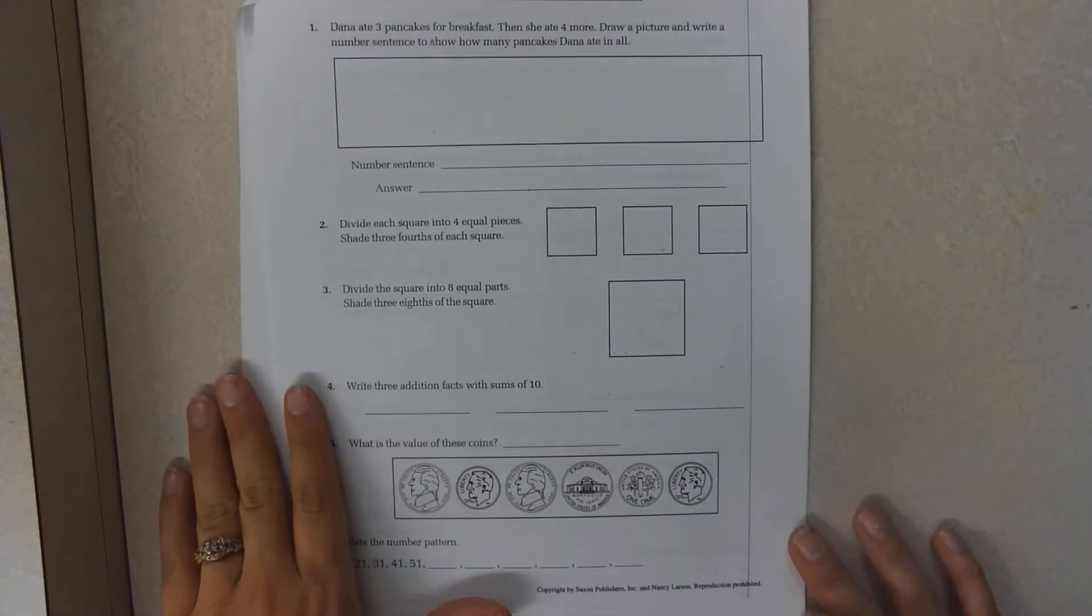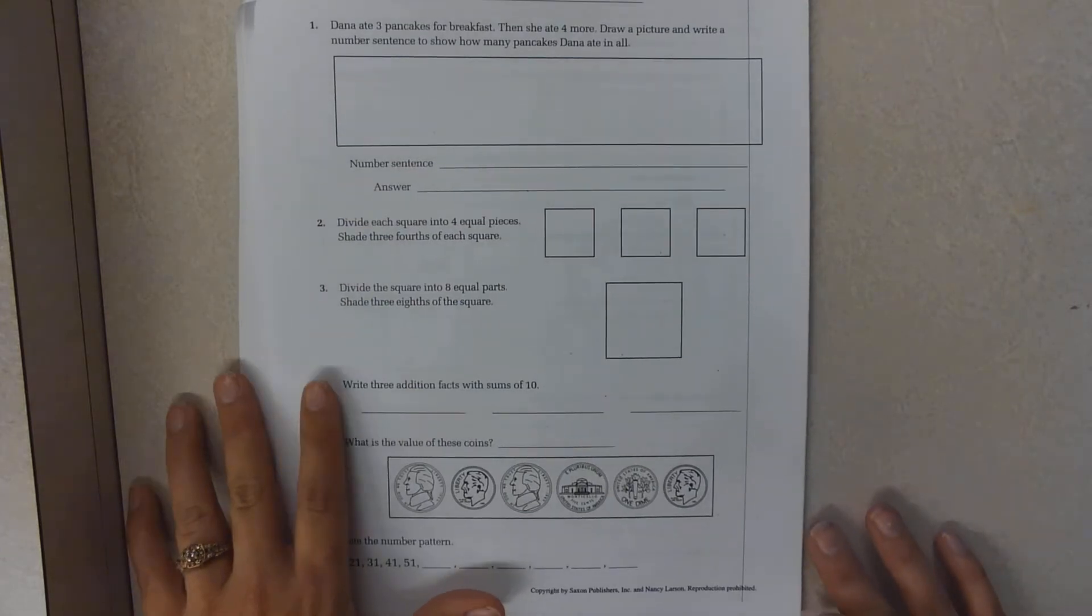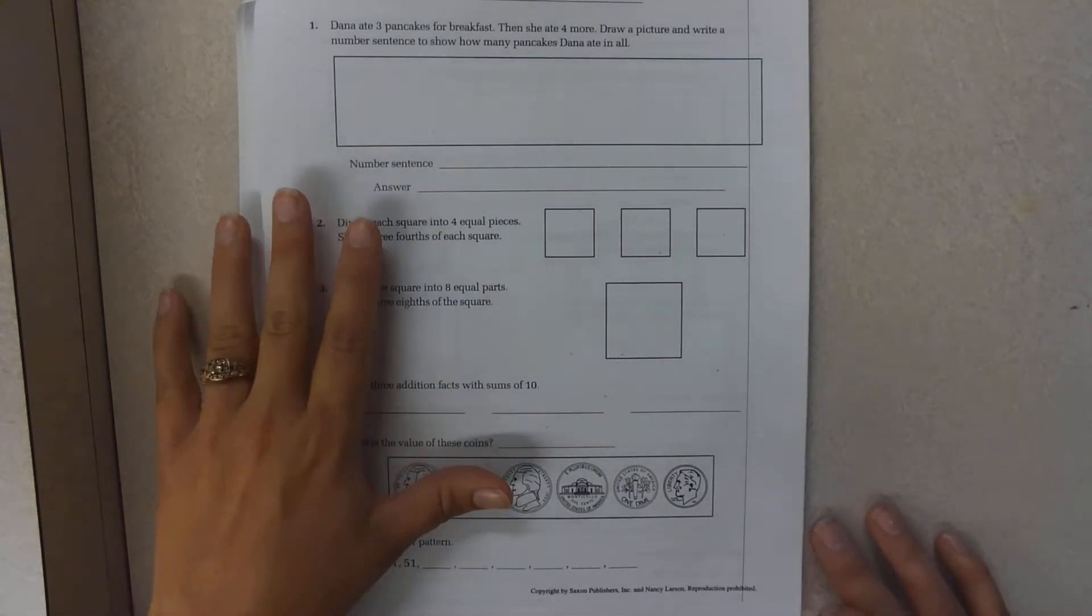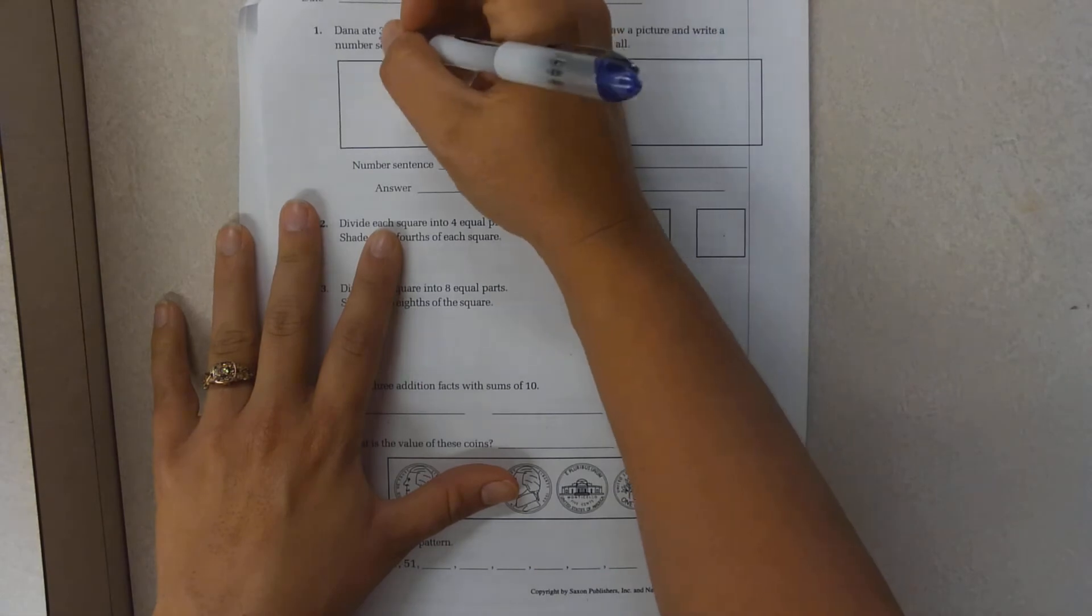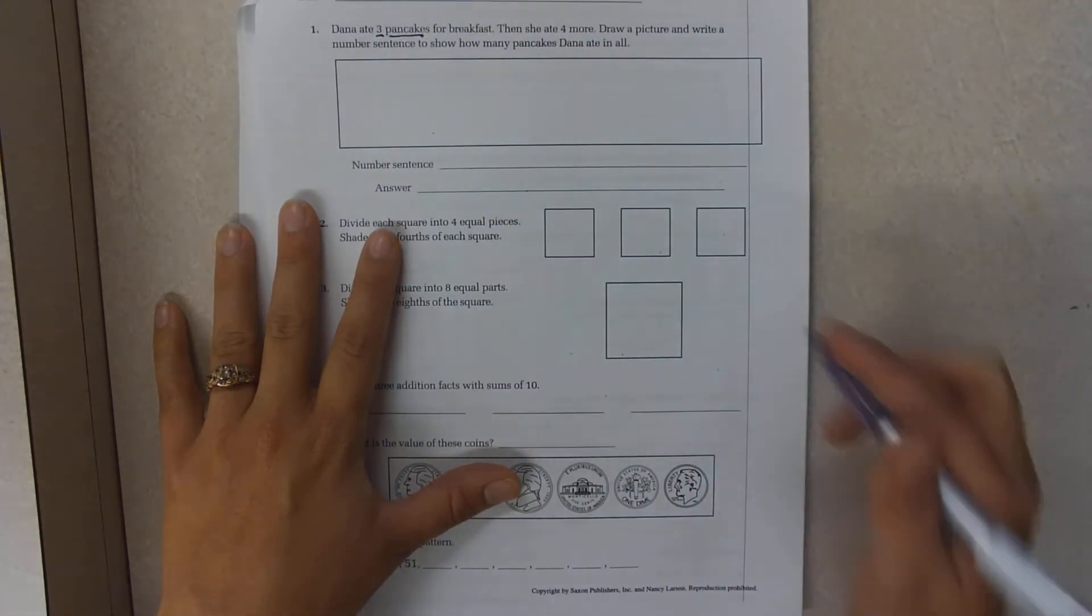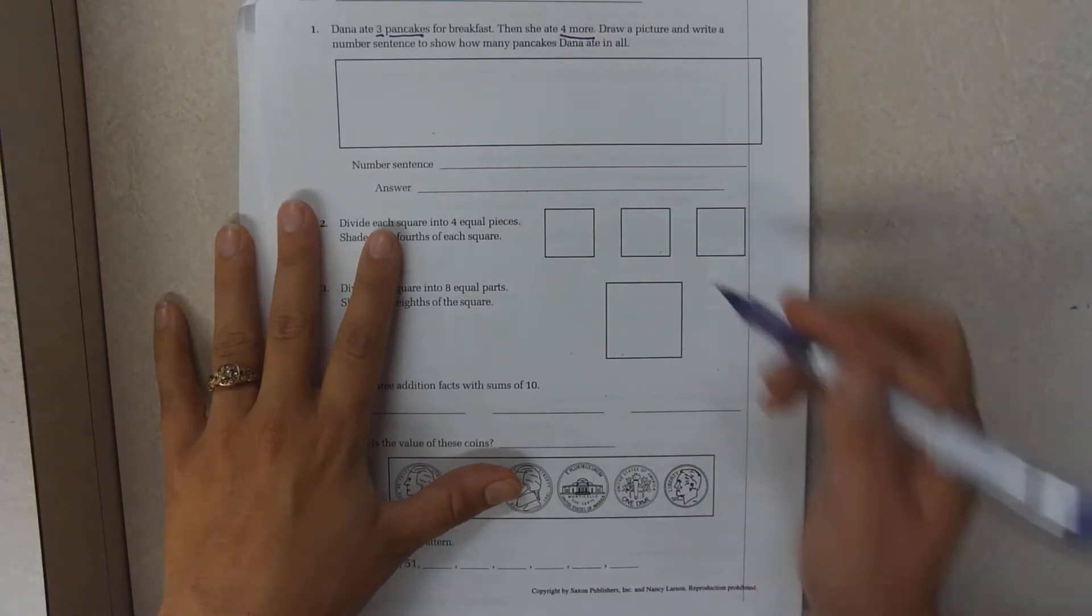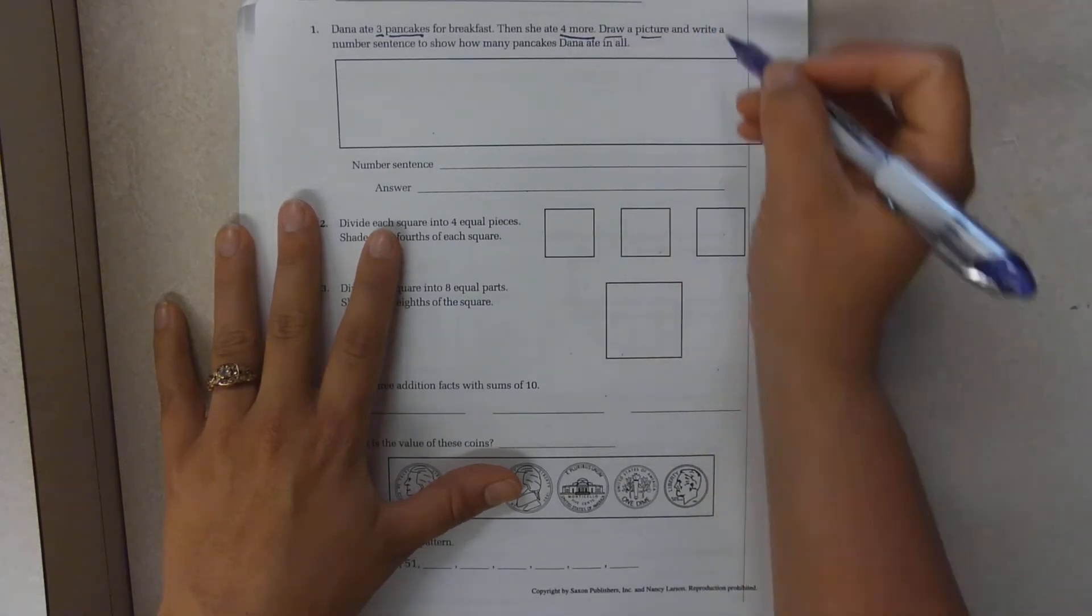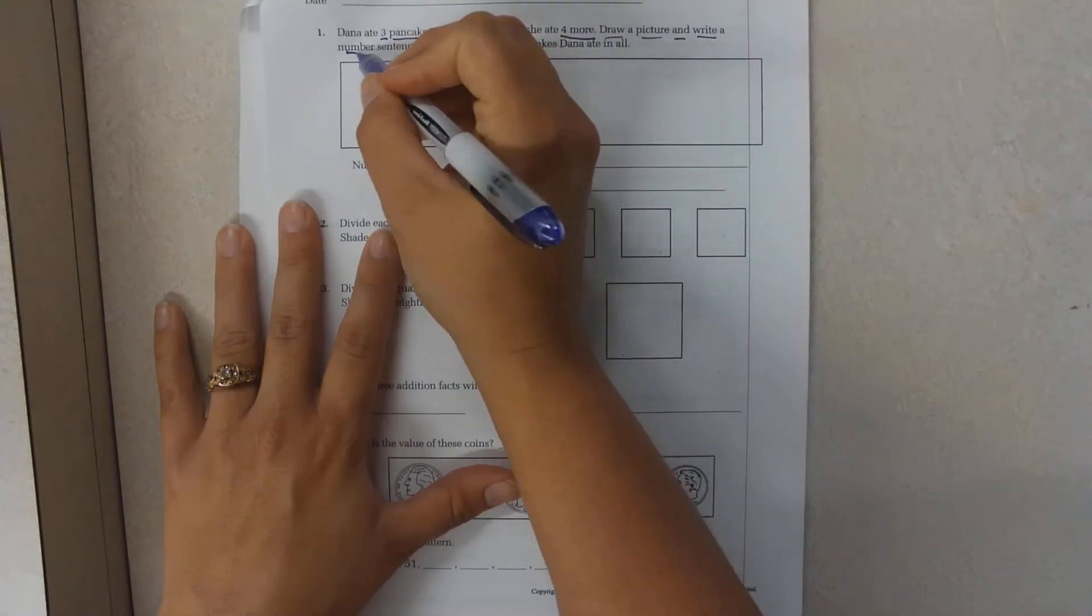Now I don't know how to pronounce this name so I just make up a name. Dana ate three pancakes for breakfast. Then she ate four more. Draw a picture and write a number sentence.